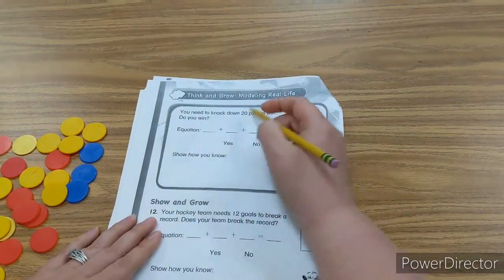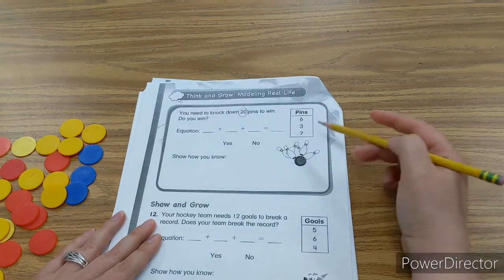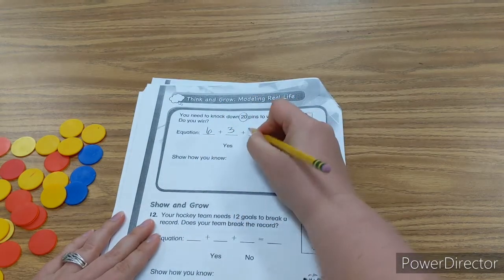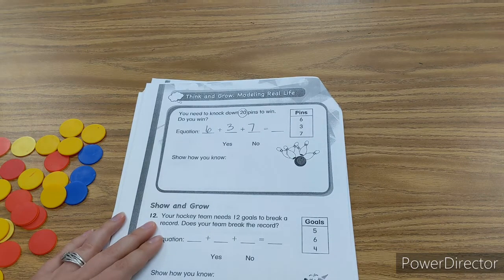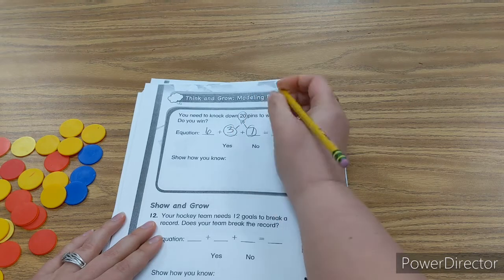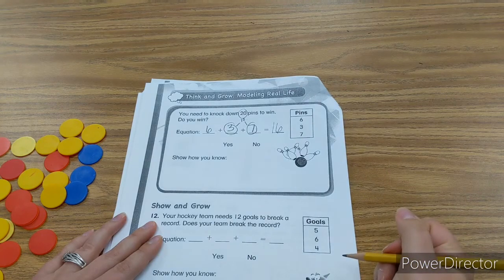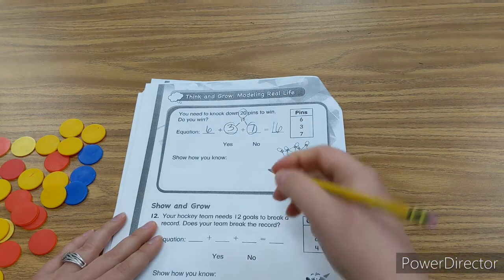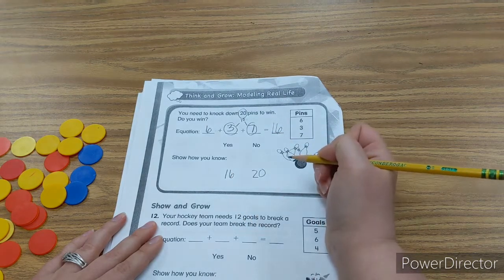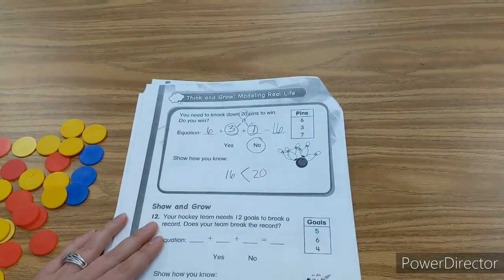You need to knock down 20 pins to win. Do you win? And here's our pins. So we have 6, 3, and 7. Now, I know that 3 and 7 make 10. 10 and 6 more equals 16. Now, is 16 more or less than 20? Very good. That's less. It's smaller than. So no, we did not knock enough pins down.